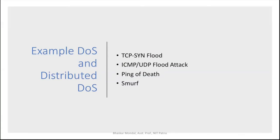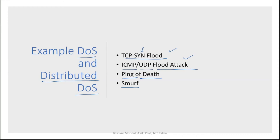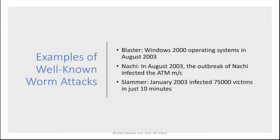Examples of DoS and distributed DoS attacks include TCP SYN flood attack, ICMP and UDP flood attack, ping-of-death attack, and Smurf attack. Going into the detail of these attacks requires discussing TCP, ICMP, and UDP protocols separately — including what SYN is in TCP and why ICMP is used. These are all different protocols that require their own discussion.